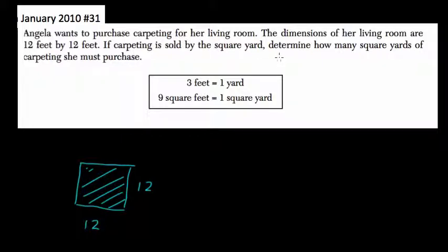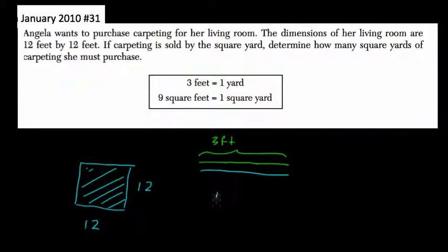If carpeting is sold by the square yard, determine how many square yards of carpeting she must purchase. So here we're told that 3 feet is a yard. So if we have 1, 2, 3 feet, let's say this is 3 feet right here, those 3 feet make 1 yard, right? So this is 1 yard is 3 feet.